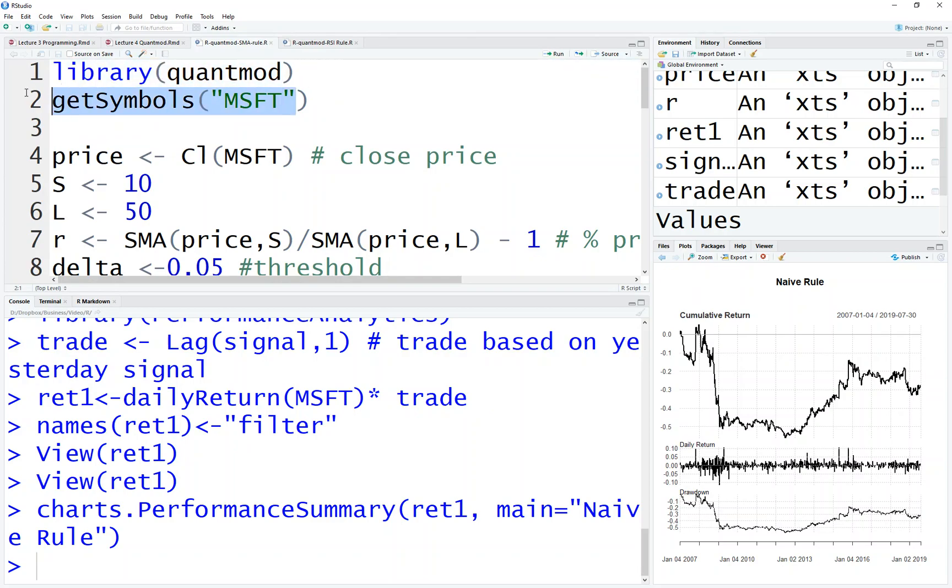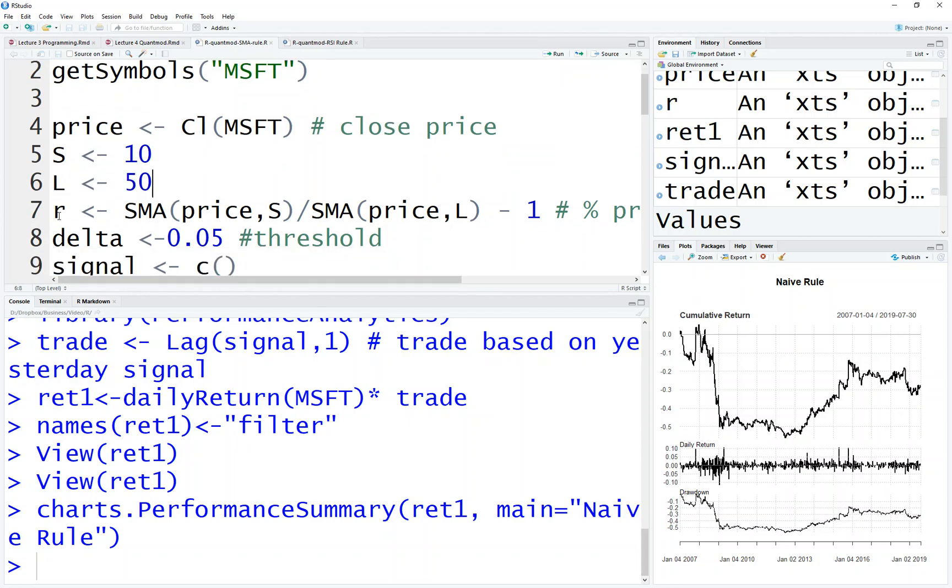quantmod. I have downloaded data for Microsoft. I use the closing price. I define what is a short-run and long-run SMA: 10 days or 50 days. And here I calculate the indicator, which is short-run SMA over the long SMA minus 1.